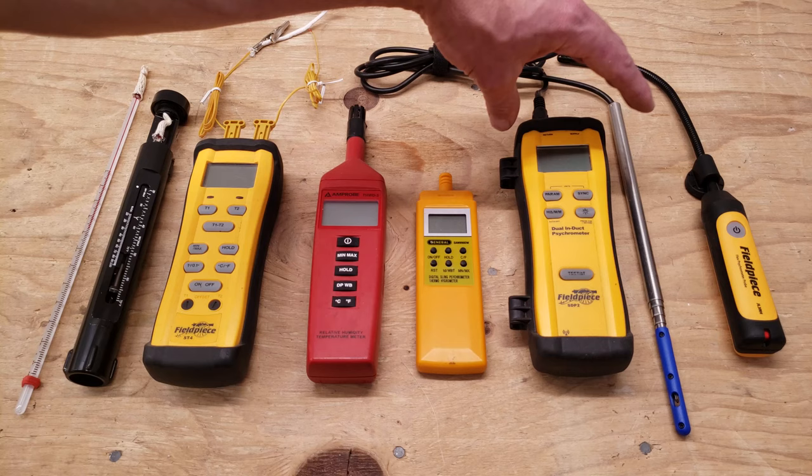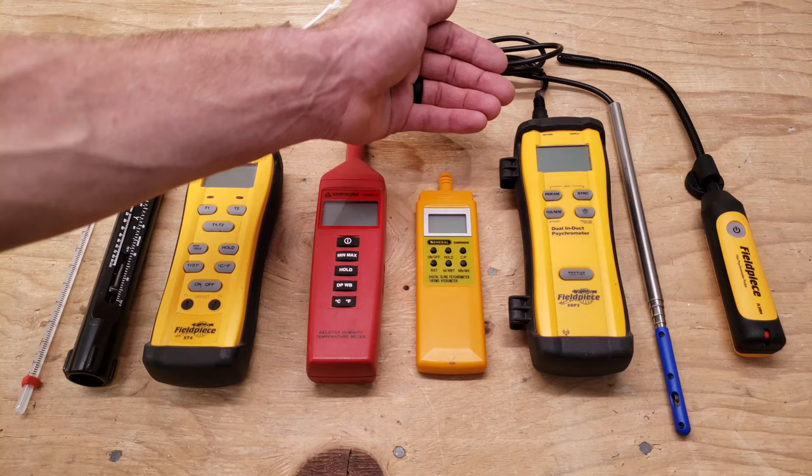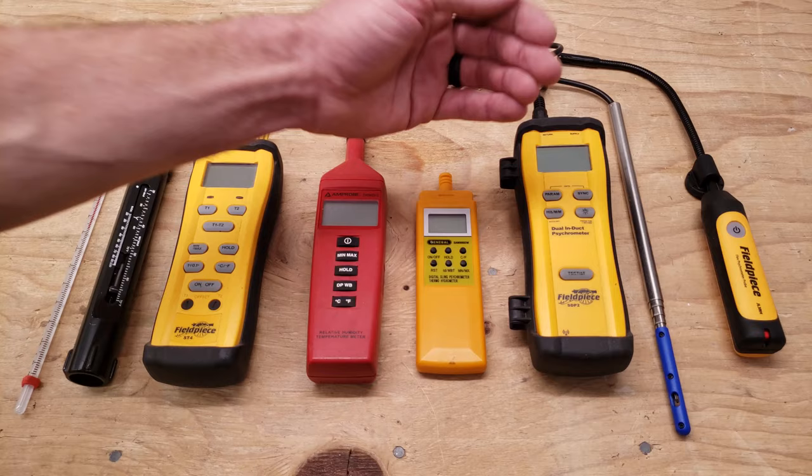Here you have an induct dual psychrometer, and this one you can get your reading and it will transmit wirelessly to your digital manifold gauge set, or you could also use it without the digital manifold gauge set as well.